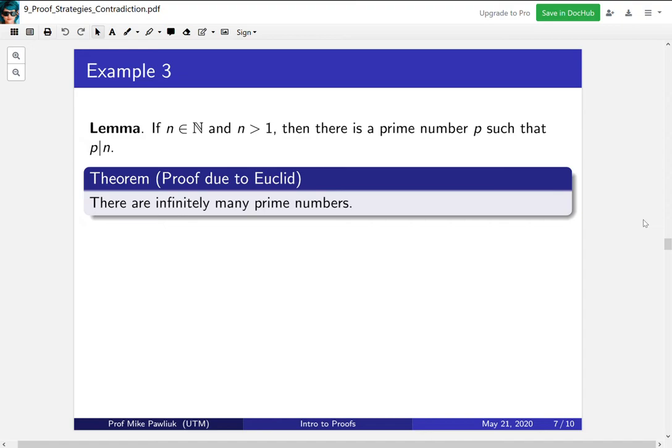Here's a theorem that there are infinitely many prime numbers, and this proof is due to Euclid. Euclid was a textbook writer—he wasn't necessarily a famous mathematician. He compiled a textbook. So this is kind of like attributing a theorem to Stewart or something. But this proof is extremely beautiful.